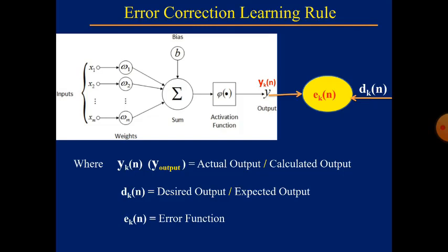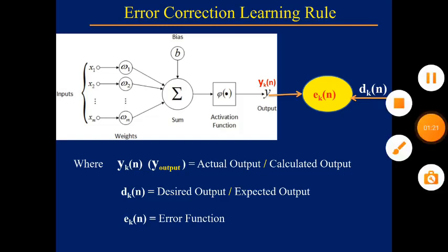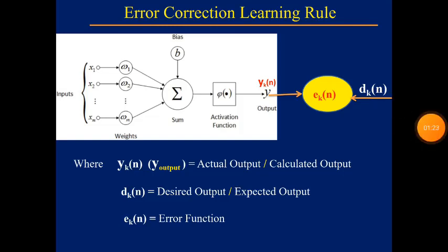When we give the summation input to the activation function, we get the actual output, represented as yk(n). Here, dk(n) is the expected output, whereas ek(n) is the error function.